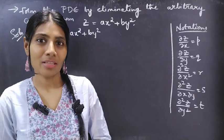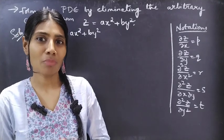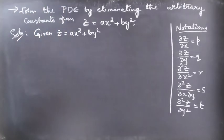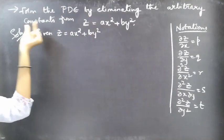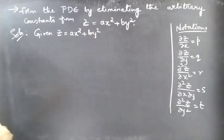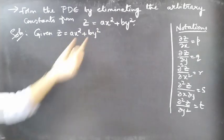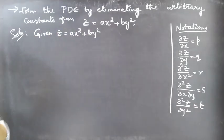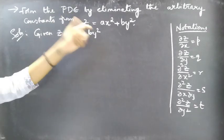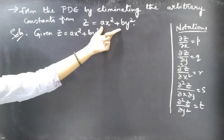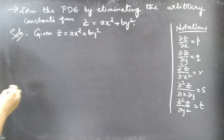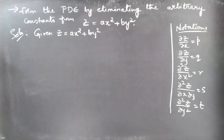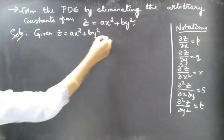Hello everyone, this is Jay Kalpana here. In this video we are going to see a problem from partial differential equations. The problem is to form the partial differential equation by eliminating the arbitrary constants from z = ax² + by². We'll begin with a detailed way of solving the problem and later go for the shortcut, reducing the number of steps.